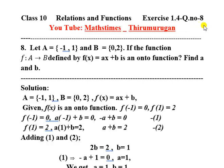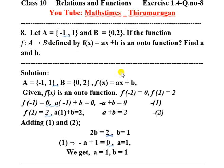Question number 8. Let set A be given as {-1, 1} and set B be given as {0, 2}. If the function f from A to B is defined by f(x) = ax + b is an onto function, find a and b. First, A = {-1, 1}, B = {0, 2}, and f(x) = ax + b.